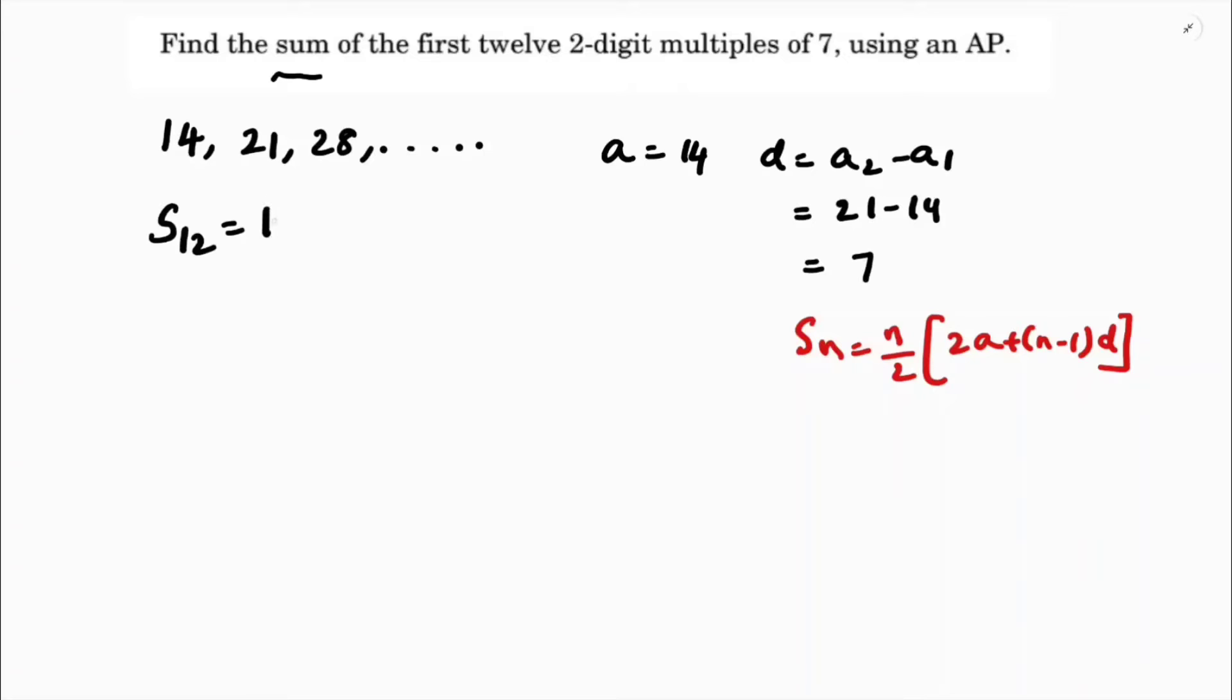Here we need to add 12 terms, so 12 by 2, times 2 times A which is 2 times 14, plus N minus 1 which is 12 minus 1 into 7. So 12 by 2 is 6, 2 times 14 is 28, plus 12 minus 1 is 11 times 7.